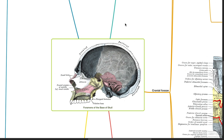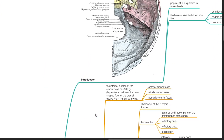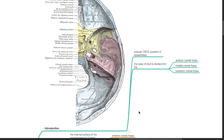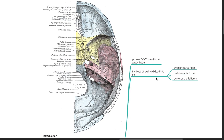Good evening, Dr. Phil here. Today we'll be discussing the foramina of the base of skull. This topic is a popular OSCE question in anesthesia. The base of skull is divided into the anterior, middle, and posterior cranial fossa.